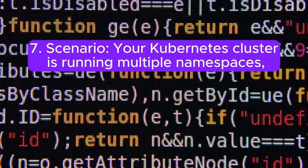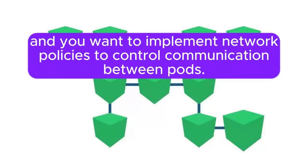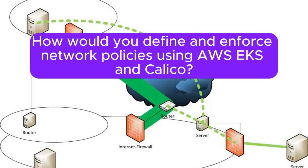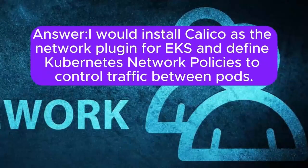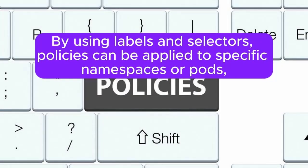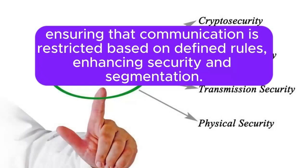Scenario 7: Your Kubernetes cluster is running multiple namespaces, and you want to implement network policies to control communication between pods. How would you define and enforce network policies using AWS EKS and Calico? Answer: I will install Calico as the network plugin for EKS and define Kubernetes network policies to control traffic between pods. By using labels and selectors, policies can be applied to specific namespaces or pods, ensuring that communication is restricted based on defined rules, enhancing security and segmentation.